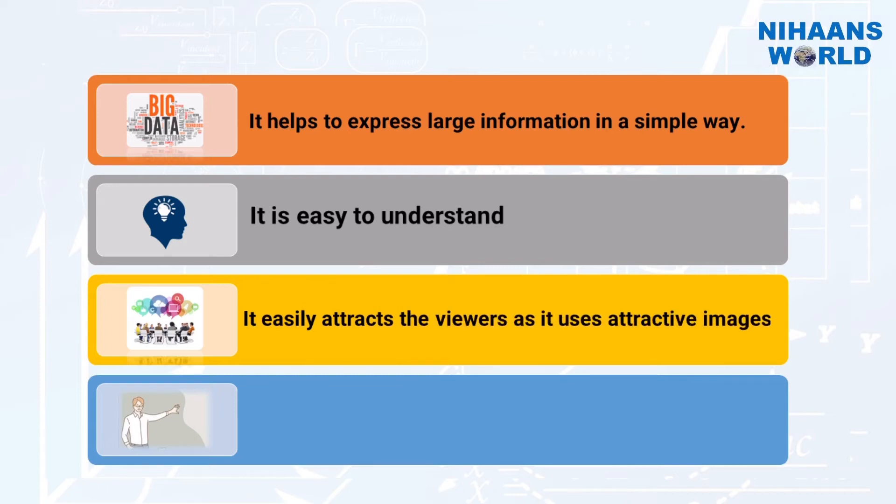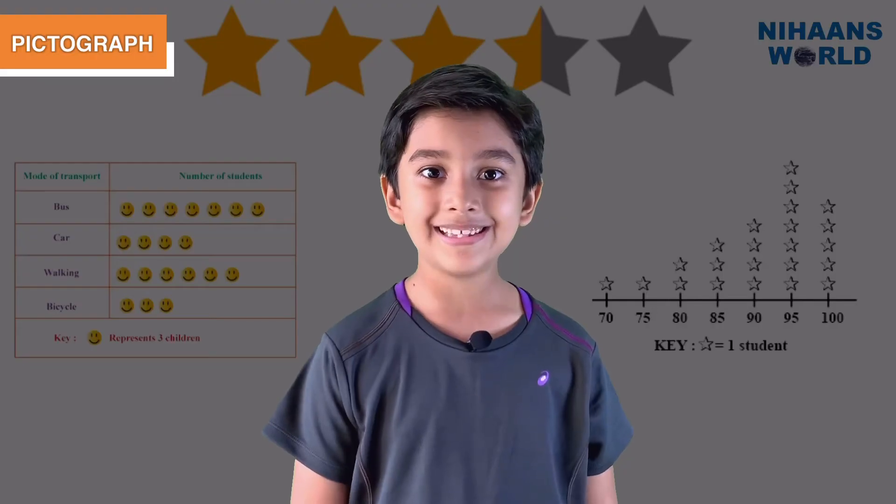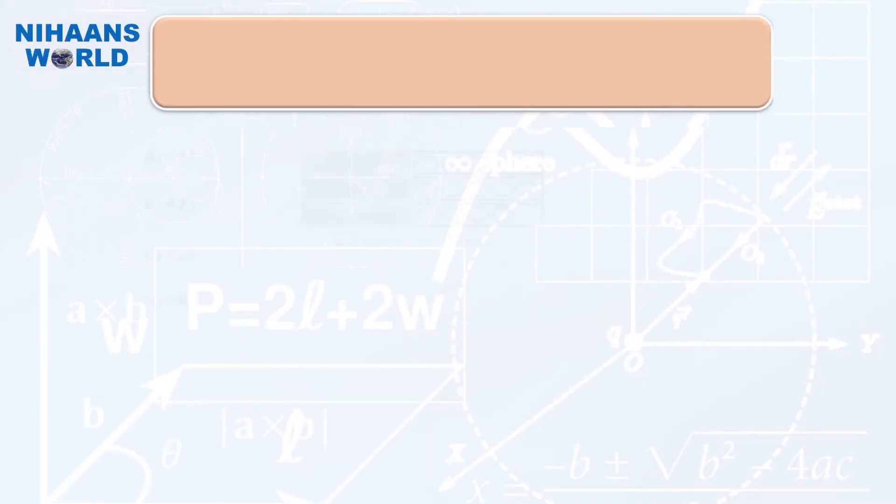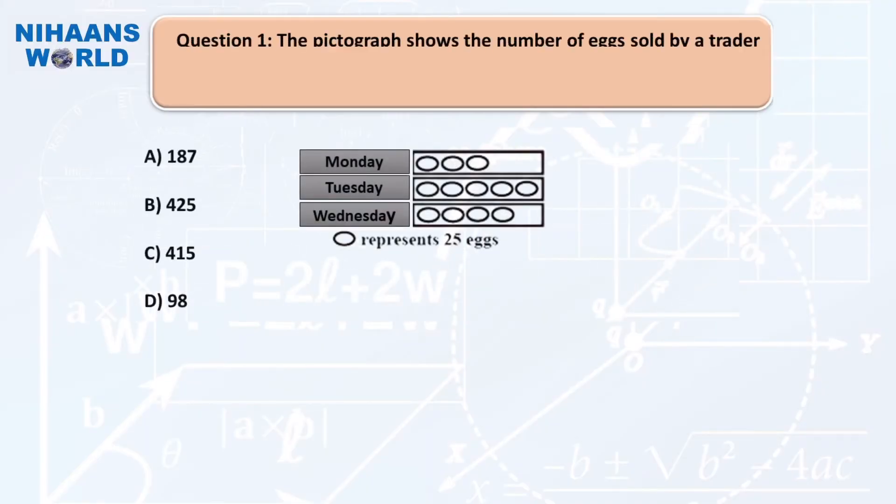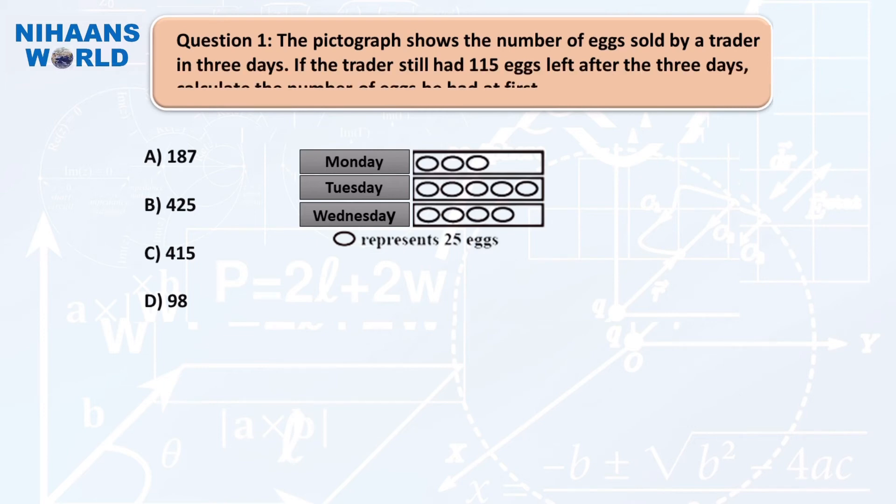Let's see the first example. The pictograph shows the number of eggs sold by a trader in three days. If the trader still had 115 eggs left after the three days, calculate the number of eggs he had at first.